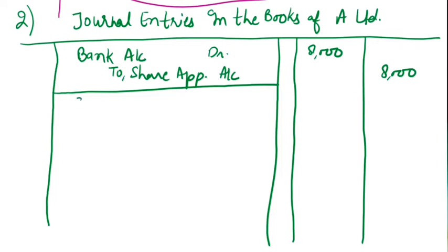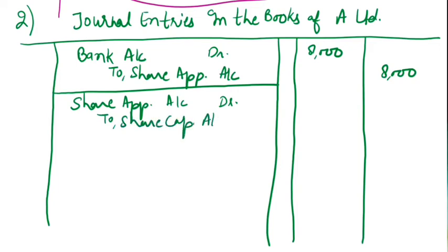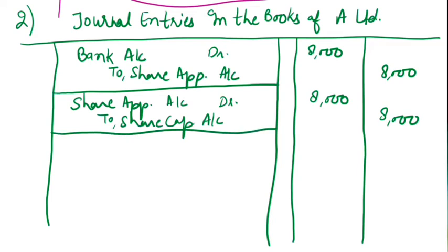Next, we transfer this money to share capital. Share Application Account debit to Share Capital Account — rupees 8,000. We have assumed the discount value is along with share allotment money. Narration: Being share application money transferred to share capital account.